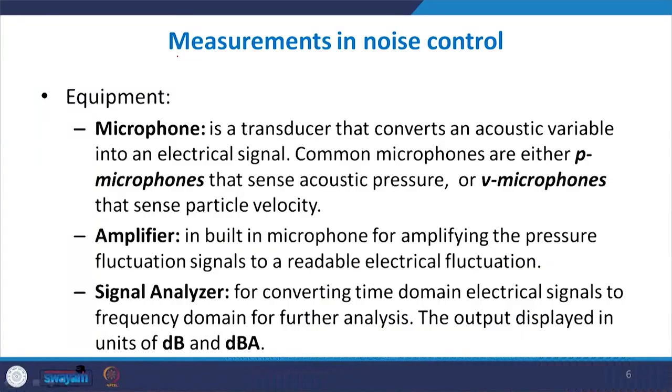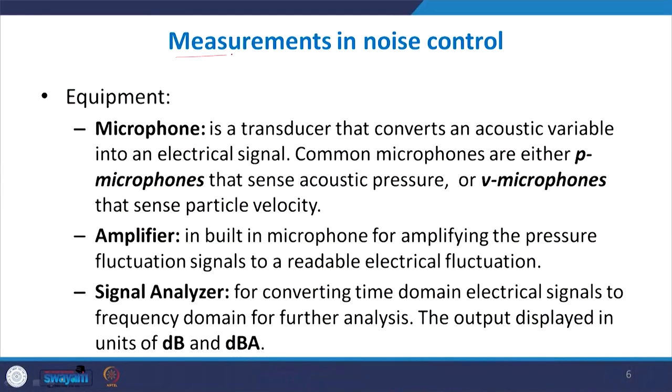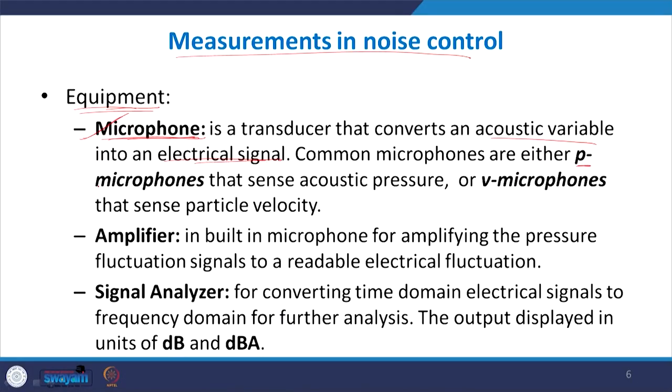When we study noise control principles, first we need to identify what equipment is used to measure noise. Once noise is measured, we can identify which sources create the most noise and at which frequencies, and devise a control strategy accordingly. The basic equipment used for measuring noise is a microphone — a transducer that converts an acoustic variable into electrical signals.